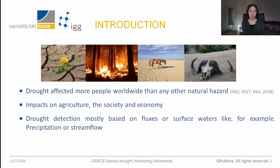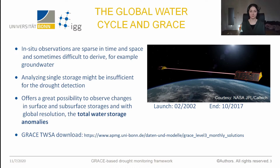Subsurface water storages are rarely used for drought detection, and observations like in situ observations for subsurface water storages are sparse in time and space, and sometimes difficult to derive — for example for groundwater.